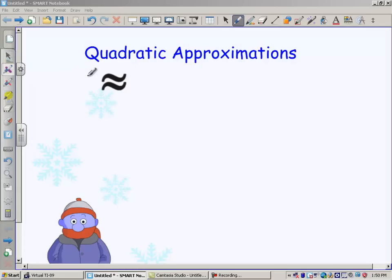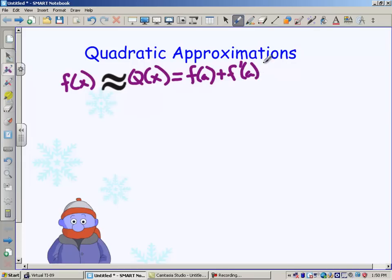So we're going to start with a statement, and that statement says that as long as a function is differentiable, then the function can be approximated by a quadratic approximation. And the quadratic approximation is exactly equal to f of a plus f prime of a times x minus a. That should look familiar. What is that? Those are the two terms in the tangent line approximation.